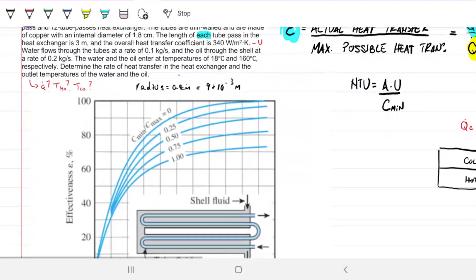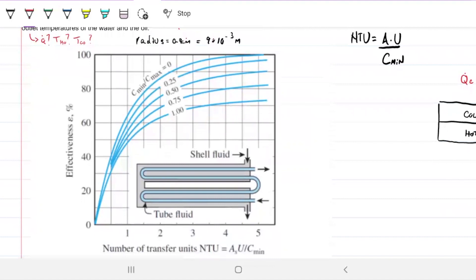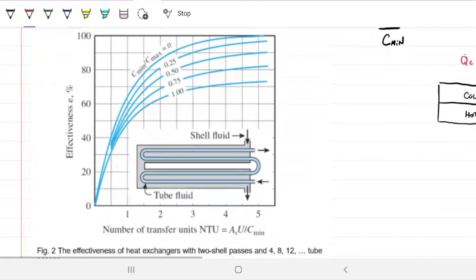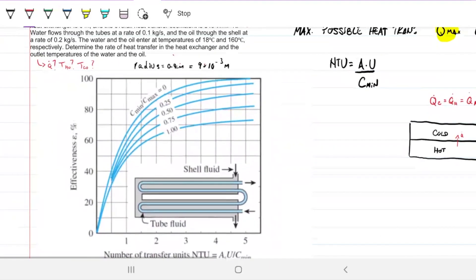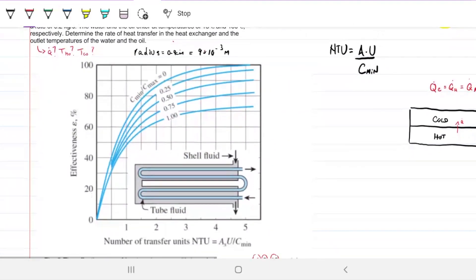What is this graph? Well, this graph is showing us the shell tube heat exchanger. It's for shells with 8, 12, or any multiple of 4 tubes. In our case, we have 12, so this is an appropriate graph.